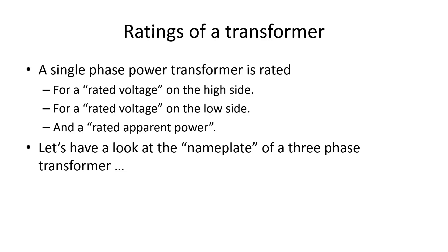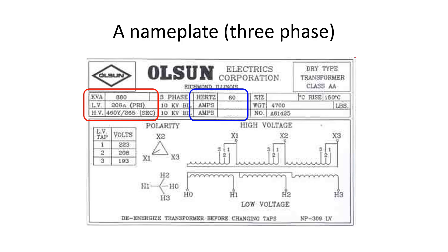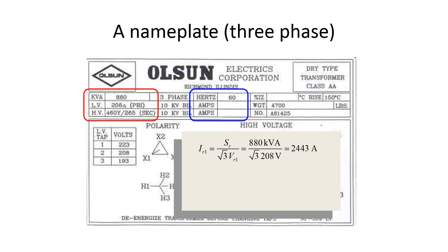Let's have a look at the nameplate of a three-phase transformer. We see the rated power, the rated voltage for the low side, and the rated voltage for the high side. Because it's a three-phase transformer, those voltages are line-to-line for the low side and both line-to-line and line-to-neutral for the high side. The primary is connected in a delta and the secondary in a star.